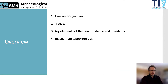This presentation is divided into four sections: one, aims and objectives — what TII want to achieve in updating their cultural heritage guidelines; two, process — how AMS on behalf of TII has gone about the work; three, key elements of the new guidance and standards, including some of the main deliverables that TII will be requiring cultural heritage professionals to deliver; and four, future engagement opportunities — how you can have your say before the final drafts are produced.